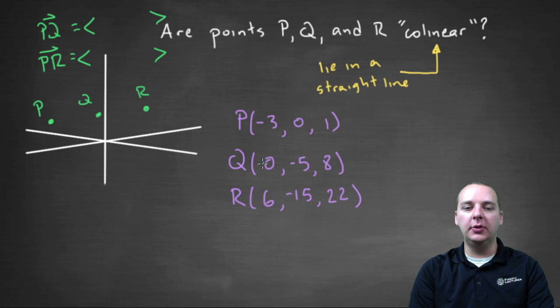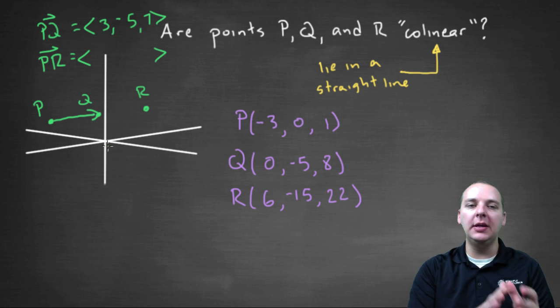For PQ, we take zero minus negative three for the x values, which gives positive three. Negative five minus zero is negative five, and eight minus one makes seven. So PQ = <3, -5, 7>, a vector pointing from P to Q.